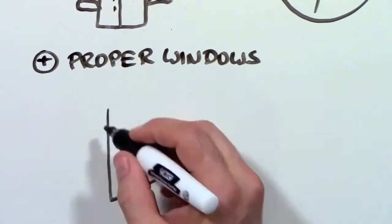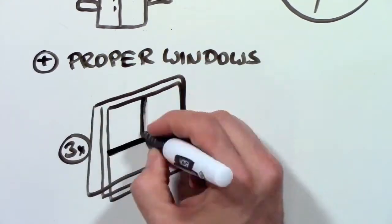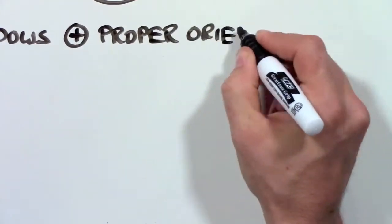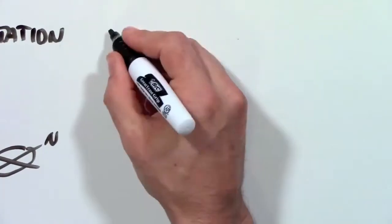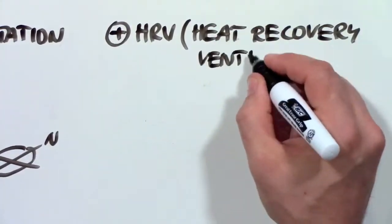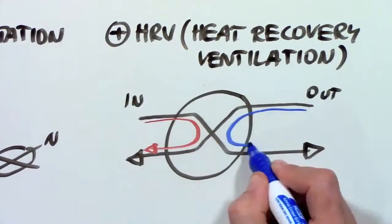Plus, the house needs proper windows most of the time with triple-pane glass. It needs to be oriented properly so the sun can heat it in the winter and shade is provided in the summer. And it uses an HRV, a device that provides the inside with fresh air without letting the heat out.